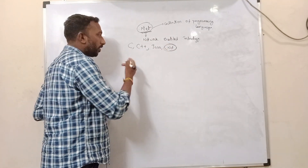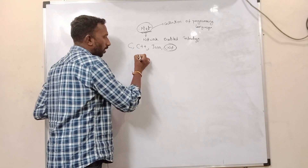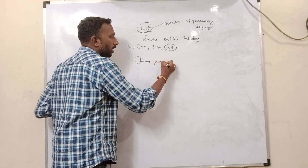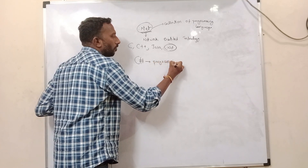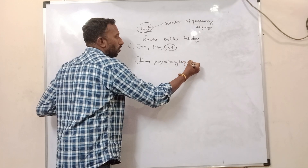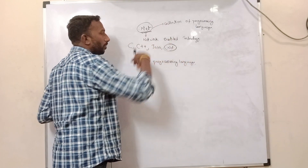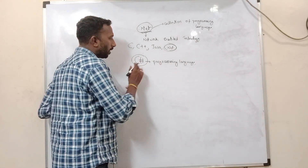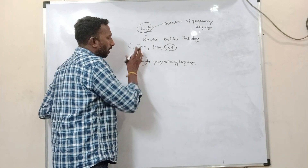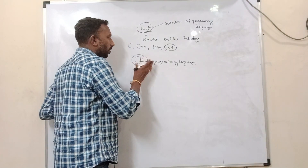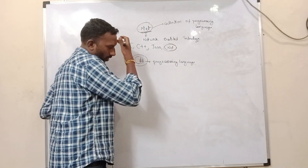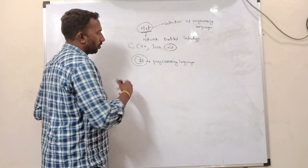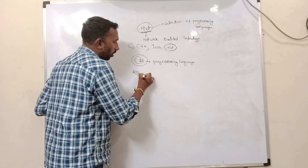So what exactly does .NET mean? As I said, it's a collection of programming languages. Under .NET, we have major languages like C#, which is considered a primary programming language. We also have J#, Microsoft and non-Microsoft programming languages. C# has taken concepts from C. Apart from that, we have Visual Basic and F#.